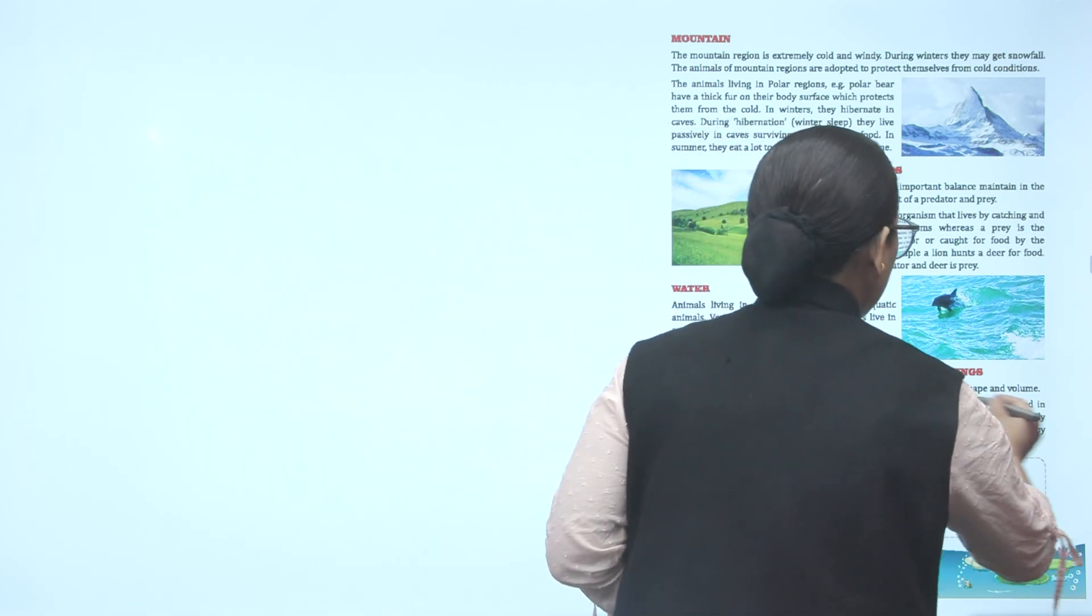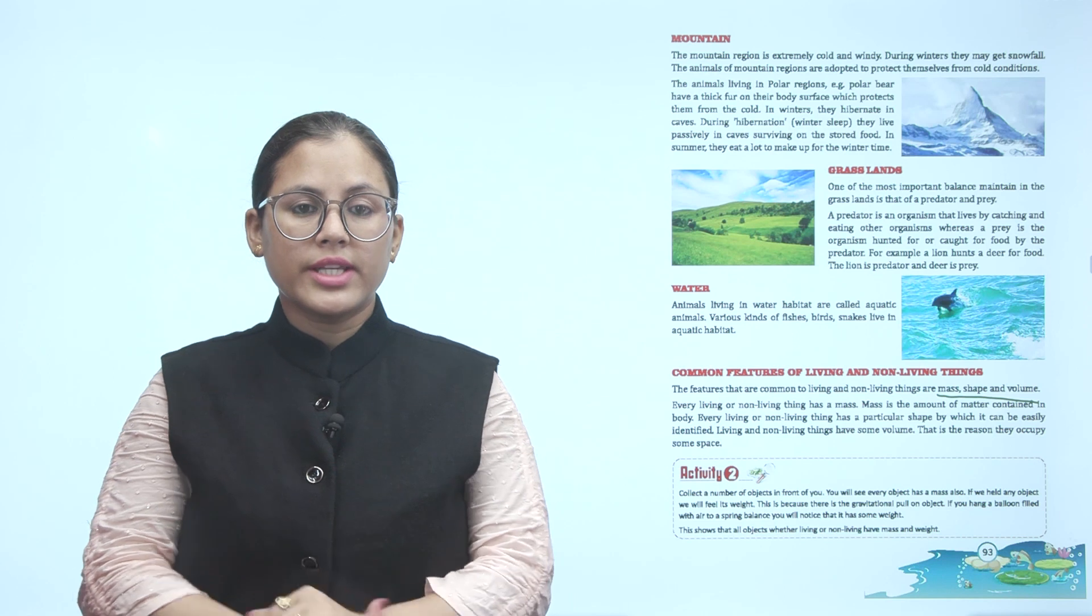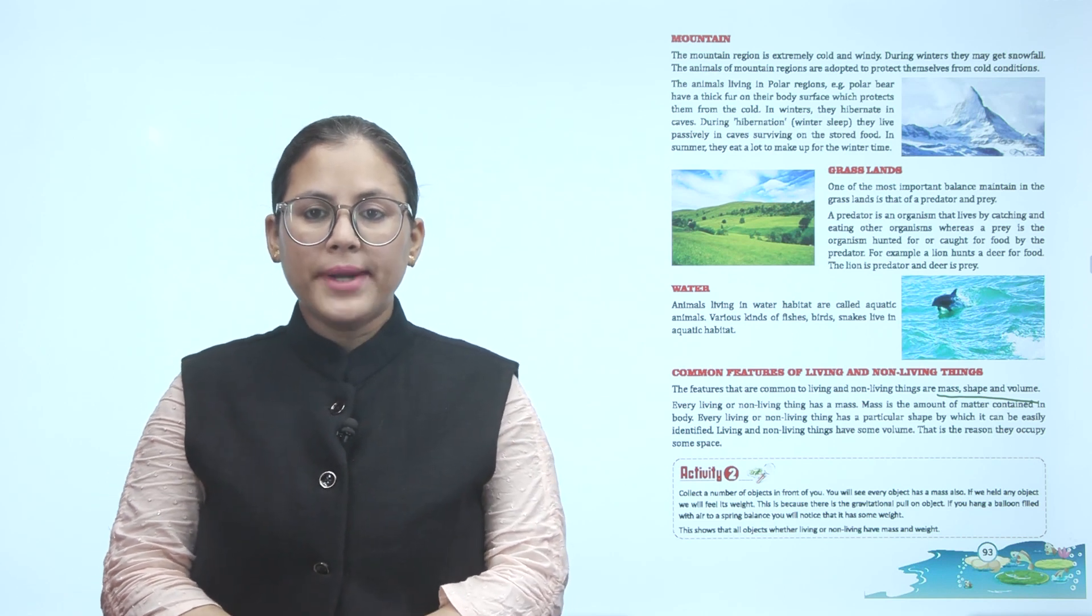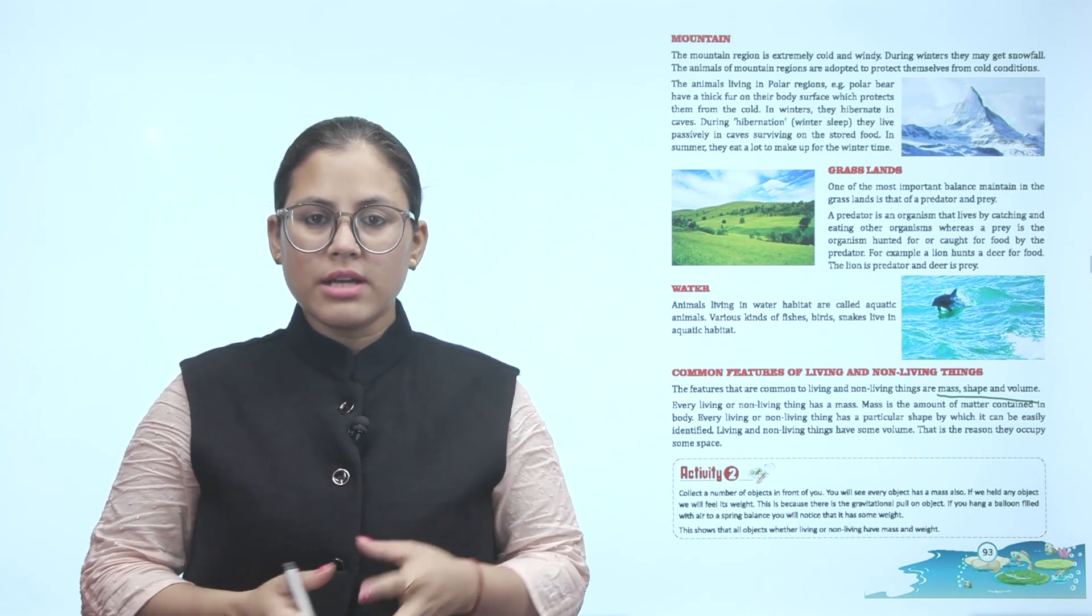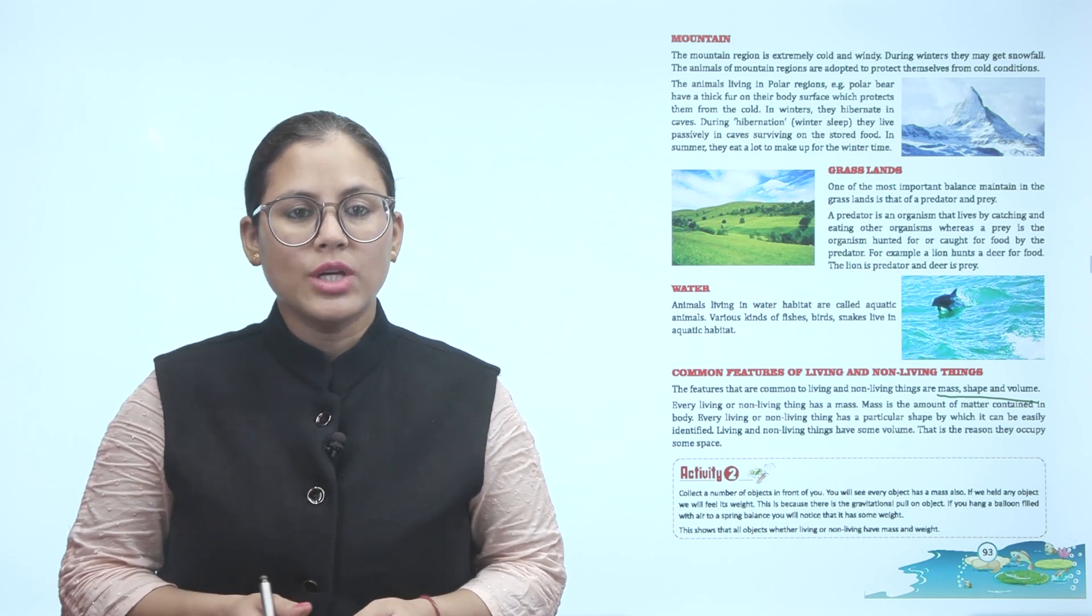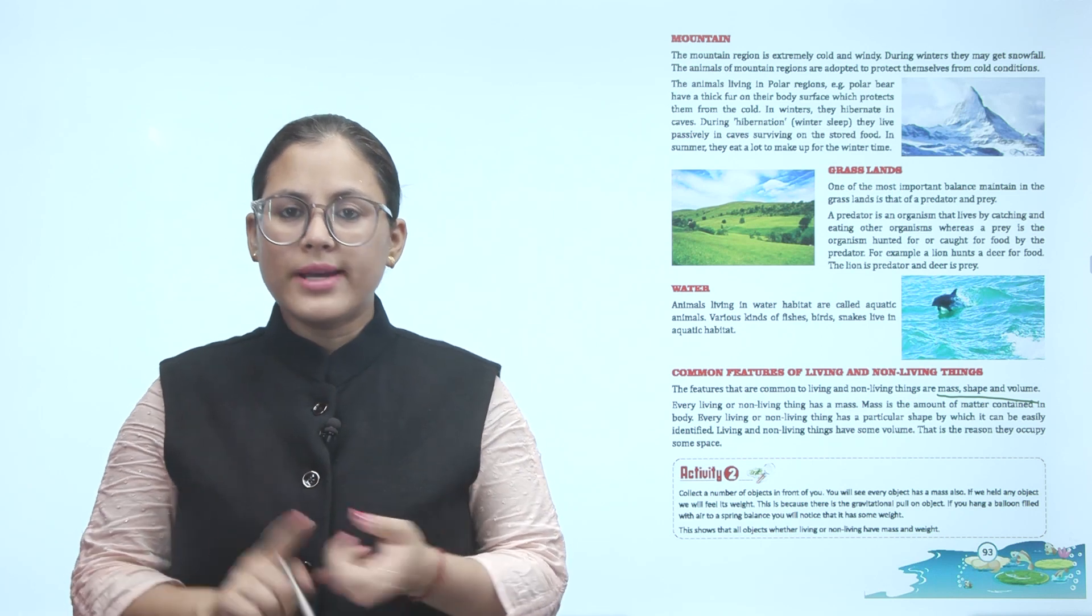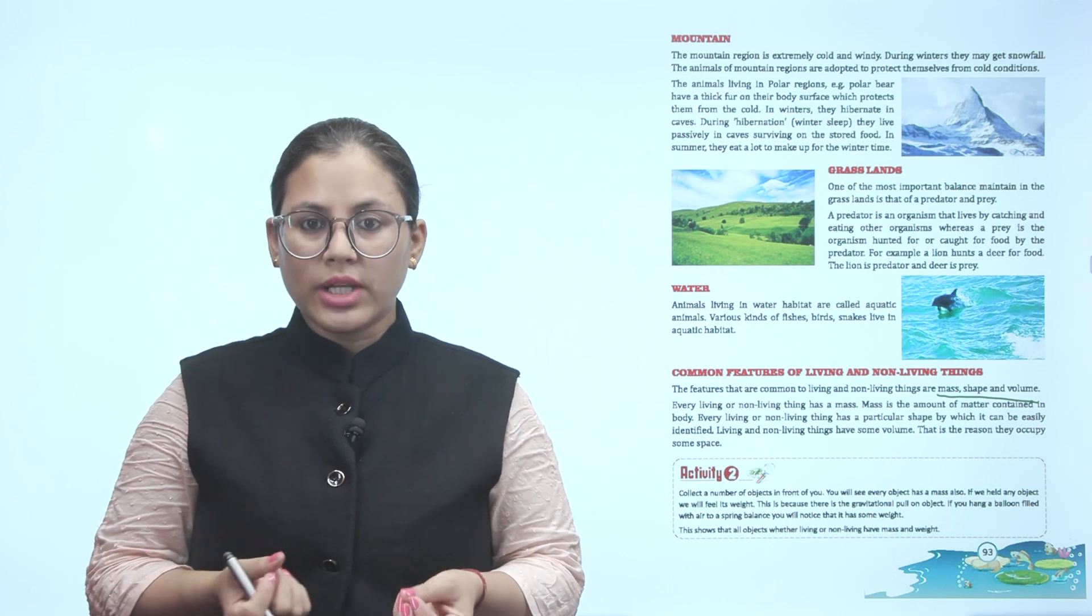Water. Animals living in water habitat are called aquatic animals. Various kinds of fishes, birds, and snakes live in aquatic habitat. Common features of living and non-living things. The features that are common to living and non-living things are mass, shape and volume. Every living or non-living thing has a mass. Mass is the amount of matter contained in a body. Every living or non-living thing has a particular shape by which it can be easily identified. Living and non-living things have some volume. That is the reason they occupy some space.